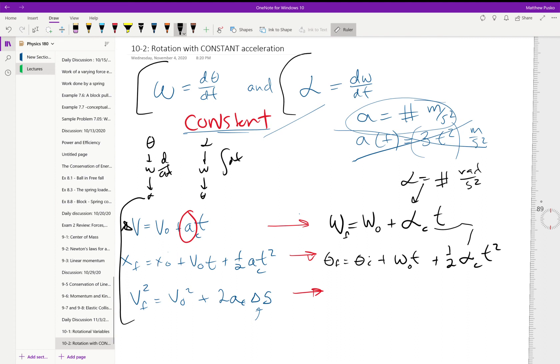And finally, our third equation here becomes omega final squared is equal to omega naught squared plus two times the angular acceleration, and then instead of a linear position coordinate, we're going to have an angular coordinate. So change in position, theta.